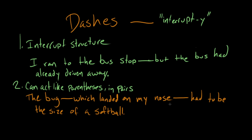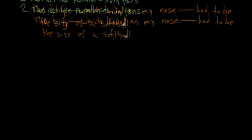So when you have them in pairs, like so, it's the bug—which landed on my nose—had to be the size of a softball. So it's kind of this aside. If we really wanted to, we could take it right out of the sentence, kind of like an appositive, right, with commas. So we could say the bug had to be the size of a softball. Sentence still makes sense.